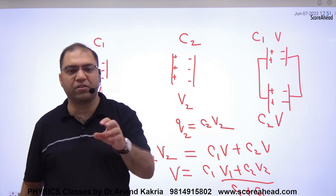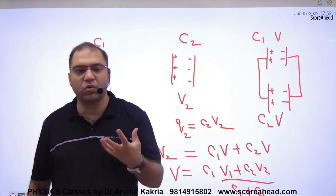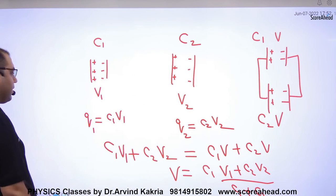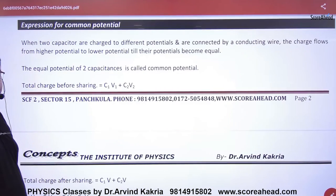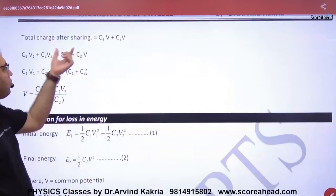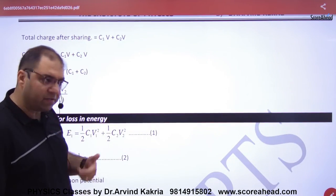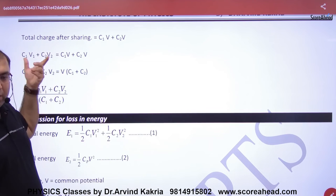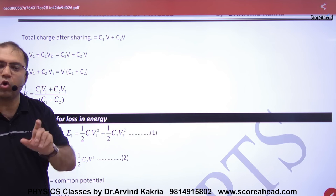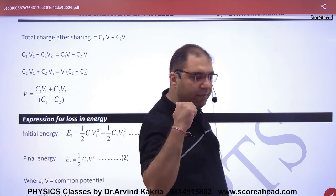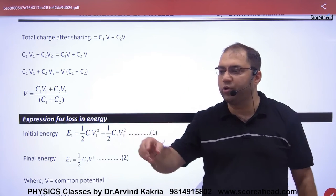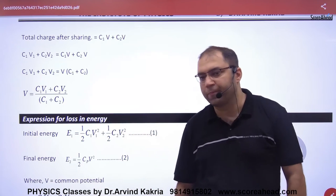Common potential means when we join the capacitors, their potential becomes common. Before sharing: charge is C1·V1 + C2·V2. After sharing: charge is C1·V + C2·V. We equate both sides, and the formula for common potential V is: V = (C1·V1 + C2·V2) / (C1 + C2).